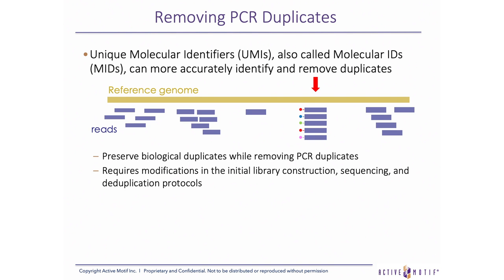To more accurately remove PCR duplicates and to avoid removing real biological duplicates, unique molecular identifiers, also called UMIs, can be used. This is accomplished through the use of an additional sequencing index in the library, which consists of a unique randomer to identify each molecule. In the simplified diagram here, the duplicate tags are shown under the red arrow, but each is distinguished by different colored dots representing the UMIs. While the two red dots are PCR duplicates with identical UMI sequences, the blue, green, and pink dots represent true biological duplicates with unique UMI sequences and are not removed from the BAM alignment. This approach, while more accurate, requires protocol modifications during library construction, Illumina sequencing, and deduplication steps.